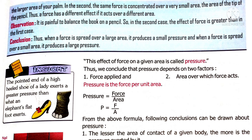In the second case it produces larger pressure, while in the first case it produces less pressure. So pressure depends upon two factors: one is force, and the other is area. More the area, less the pressure; less the area, more the pressure. So pressure and area are inversely proportional to each other. But force is directly proportional to pressure — more the force, more the pressure; less the force, less the pressure.